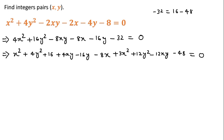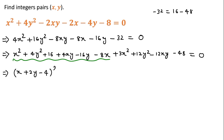We can write this equation and here, if you notice, this is in the form of the (a + b − c)² whole square formula. So we can write this part of the equation as (x + 2y − 4)² whole square. And if we take 3 common from the remaining three terms, then this becomes x² plus 4y² minus 4xy.